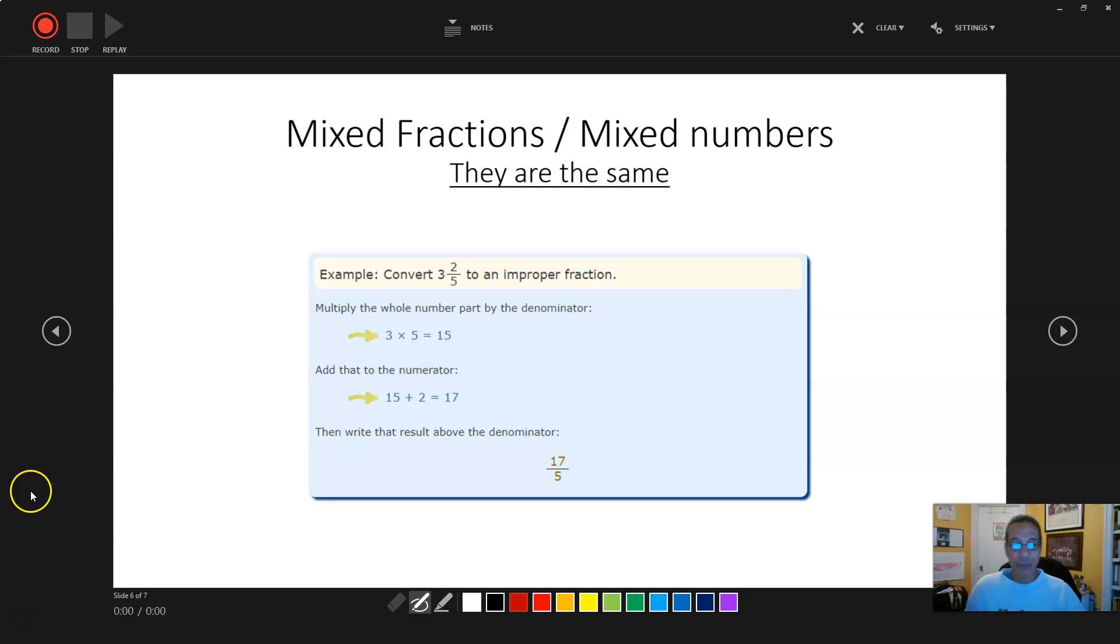Here's an example. Three and two fifths. So what we do is we take this whole number, three. Let's put it over here. Three and two fifths. My writing is not very good, that's okay.